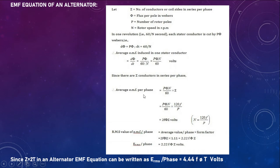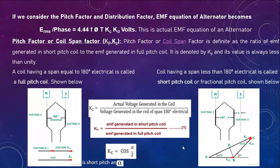The average EMF per phase is 2fφZ volts, where Z is the number of conductors in one phase. To convert to RMS value, multiply by 1.11, giving 2.22fφZ volts. So the RMS value per phase is 2.22fφZ volts — this is the EMF equation of an alternator.